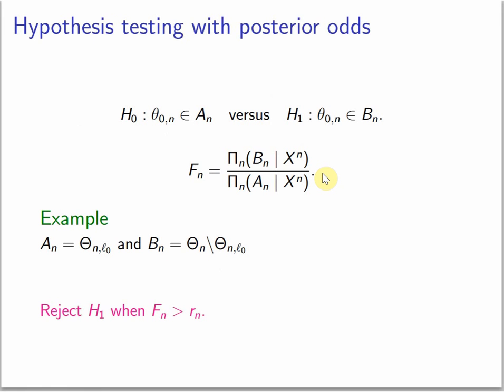Then we also treated hypothesis testing with posterior odds. If you want to test whether your true parameter is in the set An or in the set Bn and those two are disjoint, we can use posterior odds, the posterior mass of Bn divided by the posterior mass of An. If the null hypothesis is true, then it's expected that the posterior mass around An is big and around Bn is small, so this fn will be small. Vice versa, if the alternative hypothesis is true, then the posterior will put a lot of mass in Bn and less in An, so this will be big.